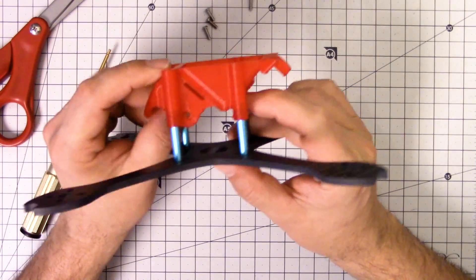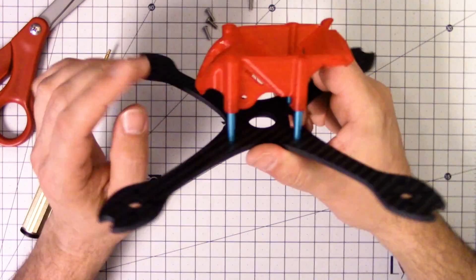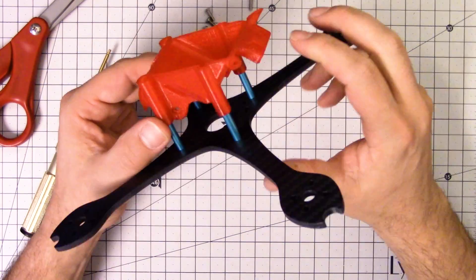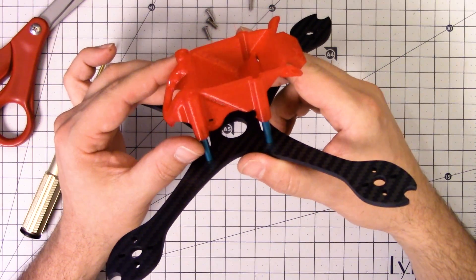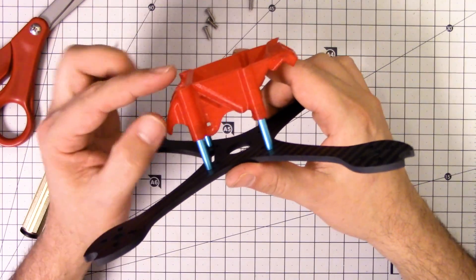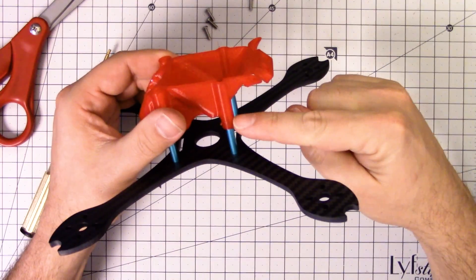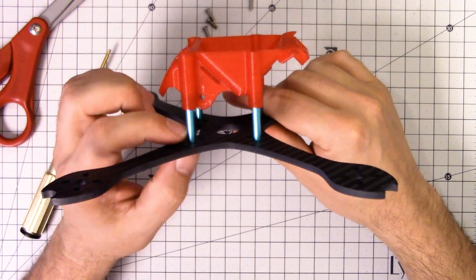I don't really know what holds it on there, just friction I guess. Everything fits in there. One of the complaints that I've heard about this frame is that because you don't have any plate on top here, in bad crashes the TPU will flex and give and these standoffs will get bent.